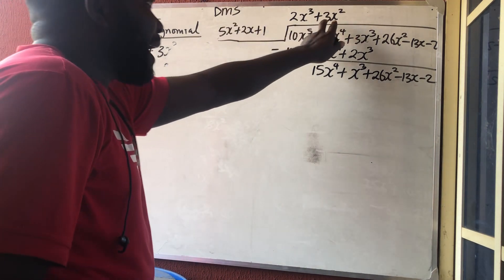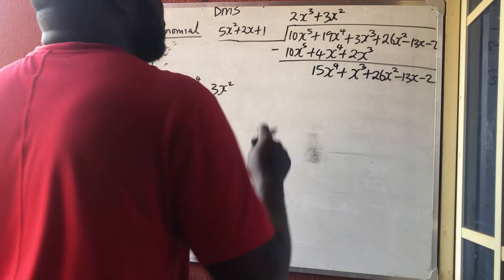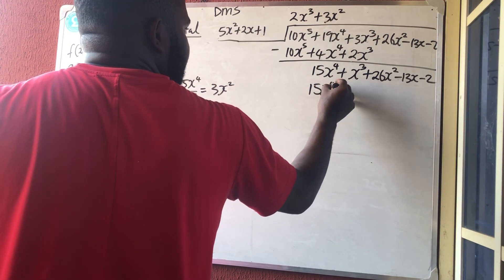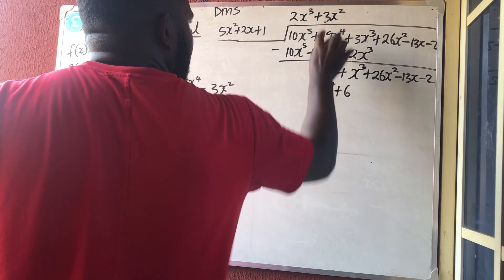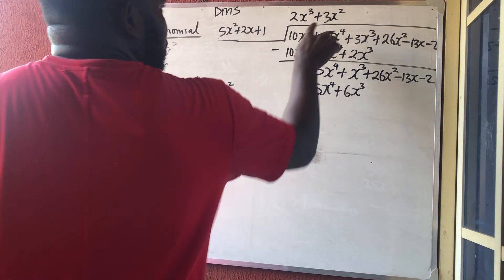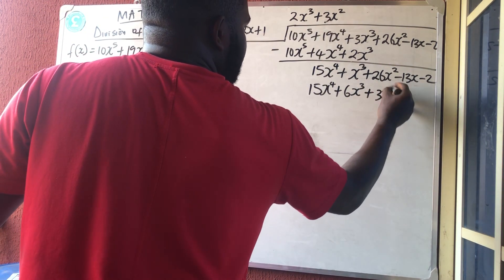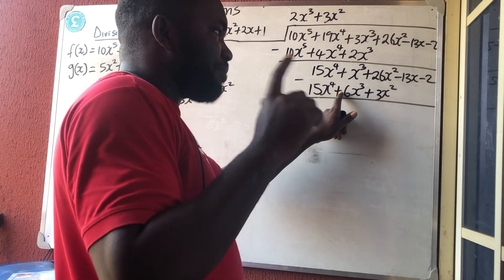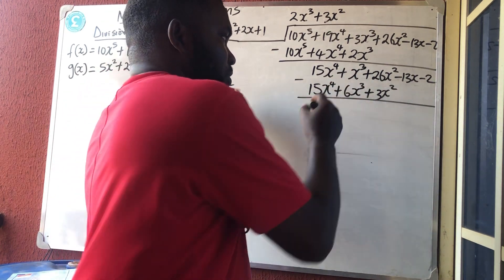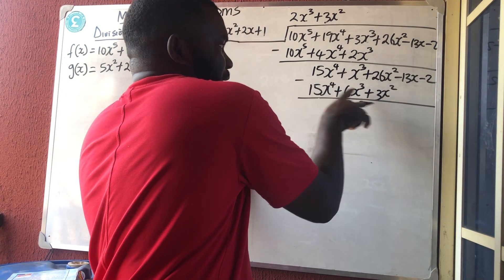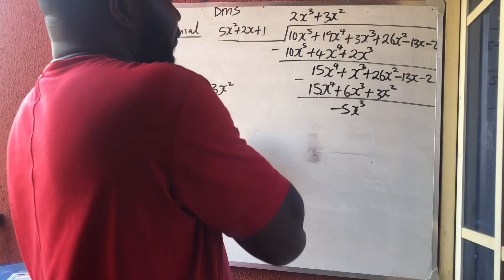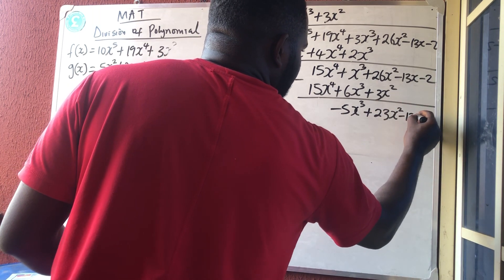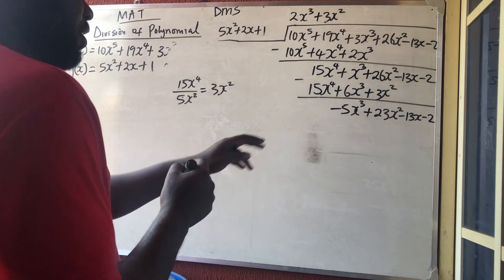Multiplication: 3x² times the divisor. 3x² times 5x² gives 15x⁴. 3x² times 2x gives 6x³. 3x² times 1 gives 3x². Now subtract: the x⁴ terms cancel. Minus times plus is minus, so 1 minus 6 gives −5x³. And 26 minus 3 gives 23x². Bring down −13x and −2 since they have no like terms.